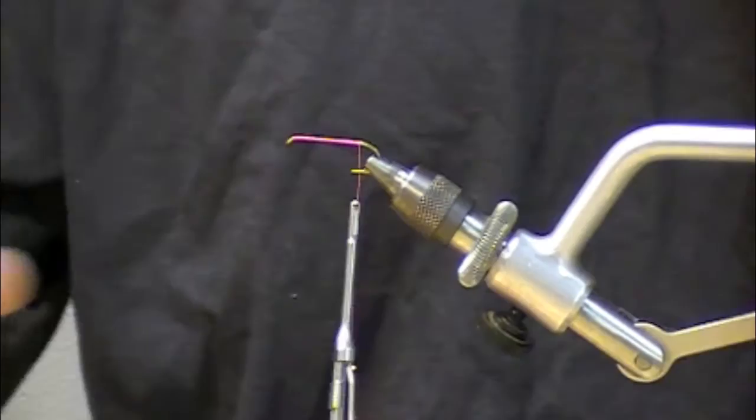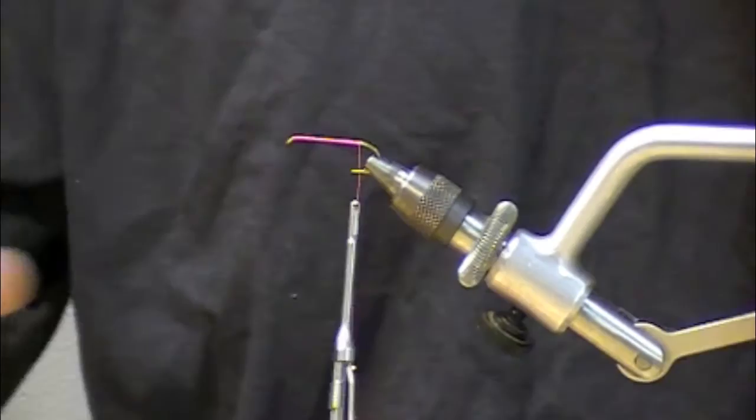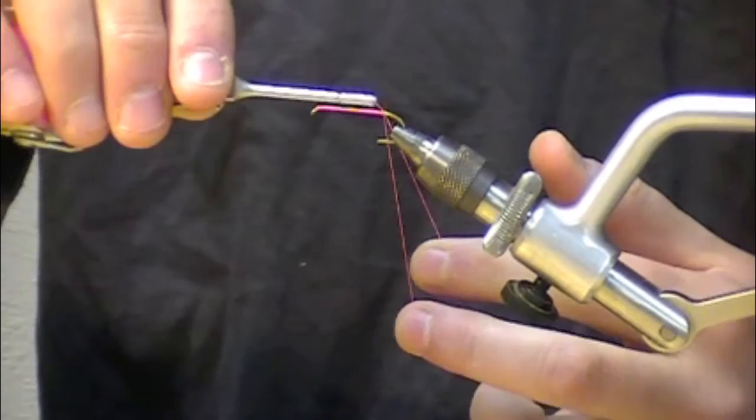We've got the bobbin hanging, we're going to just pull down about six inches, we're going to come wrap right over the top of that loop. So I've got this loop independent.